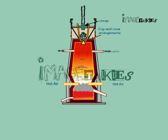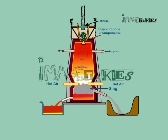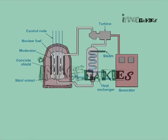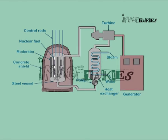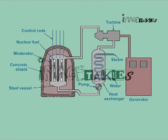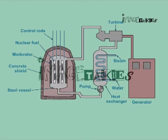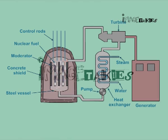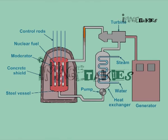The iron produced will be in molten state and is collected at the bottom of the furnace. Calcium silicate is a slag; it collects at the bottom of the furnace above the molten iron. In a nuclear power plant, the energy released by fission is used to produce superheated steam. This turns a turbine, which in turn operates an electric generator.